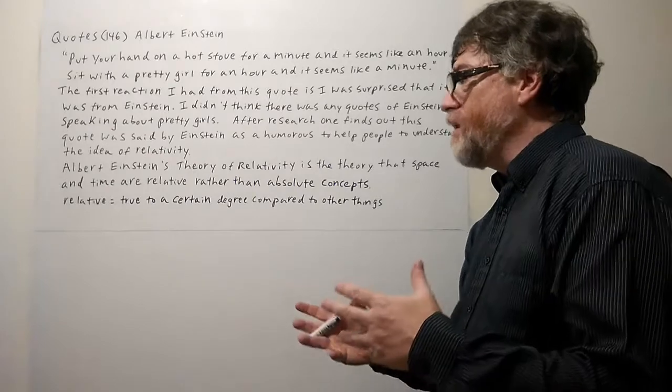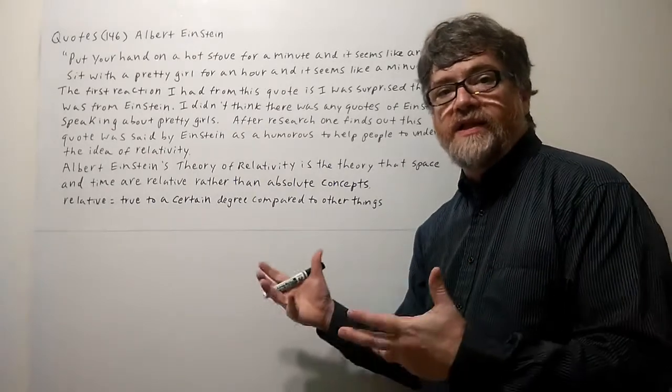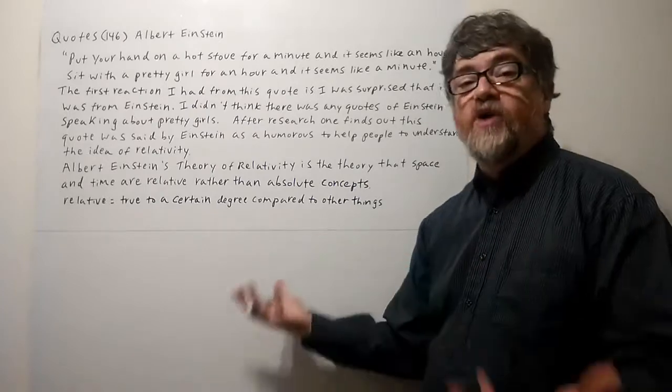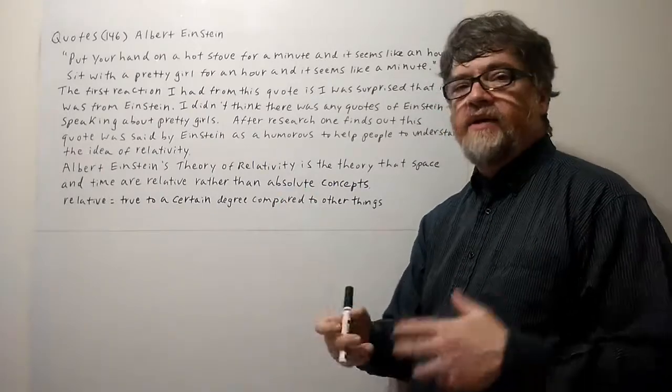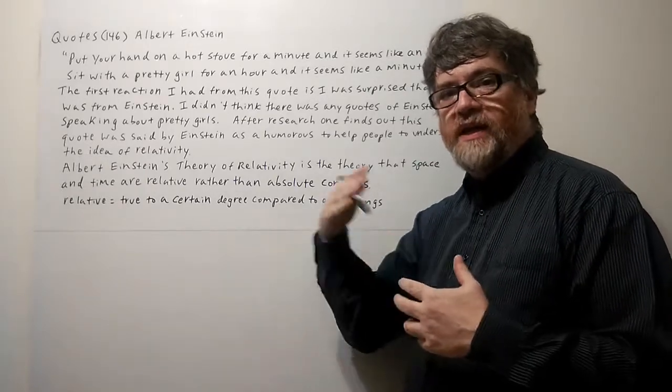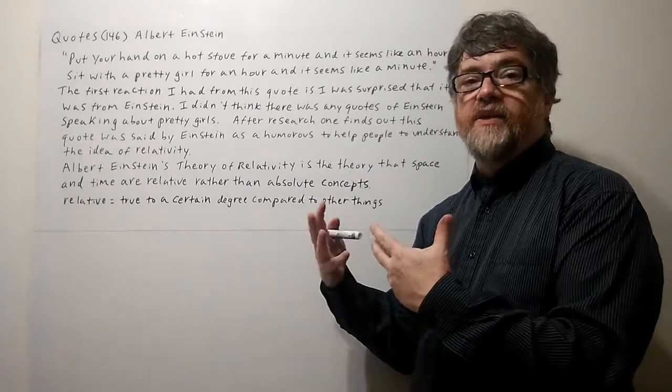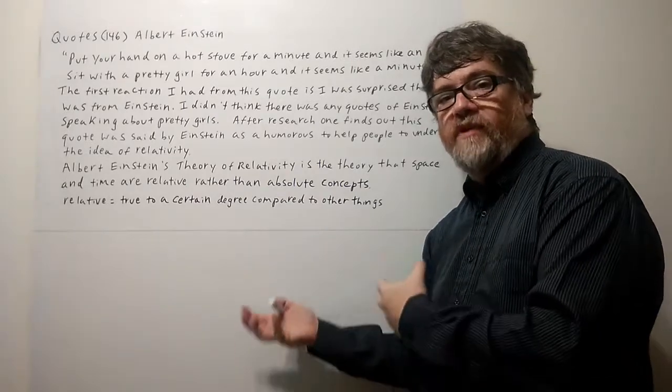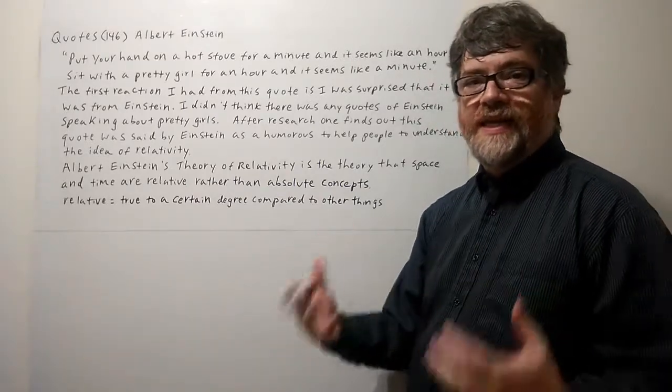Now when you start talking about Einstein's theory of relativity, this is the one when we started thinking about time travel. Because according to Einstein's theory, if you could travel past the speed of light, time actually slows down. And this is what could possibly make time travel possible. That was the idea.